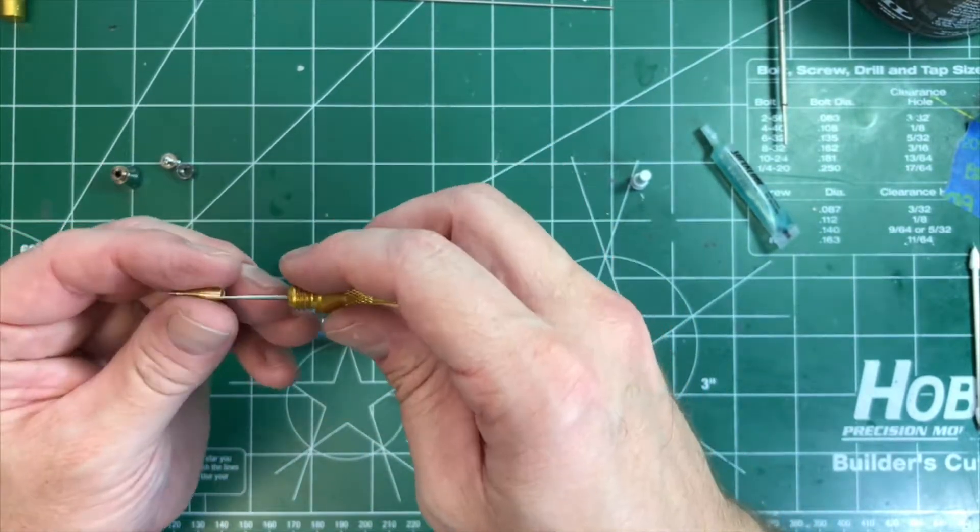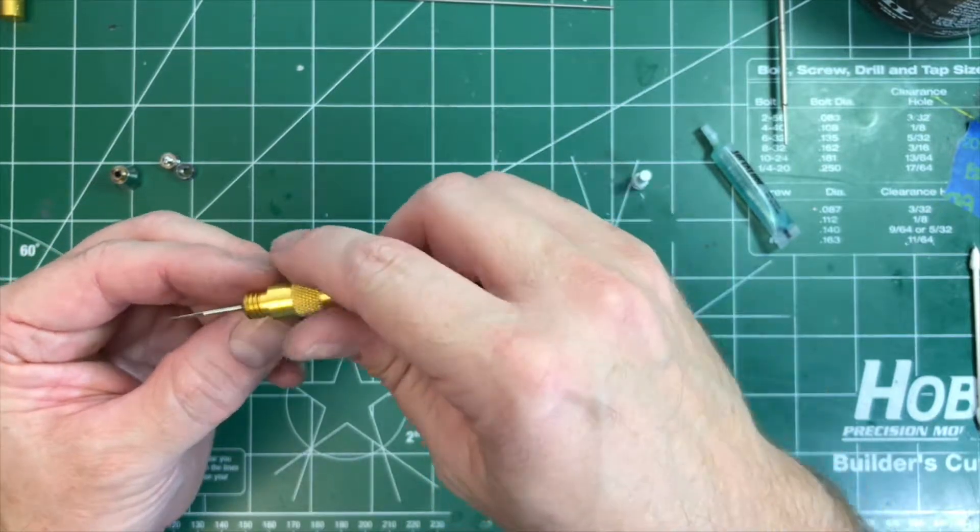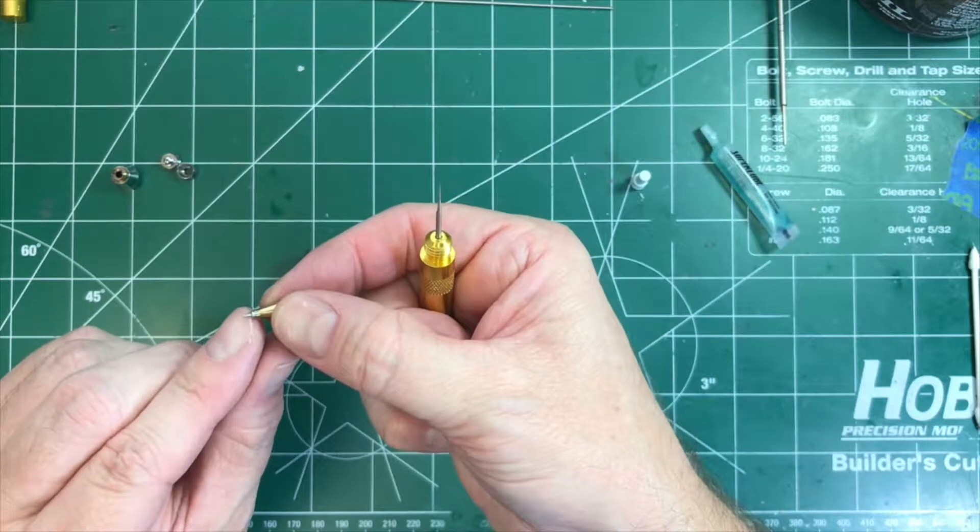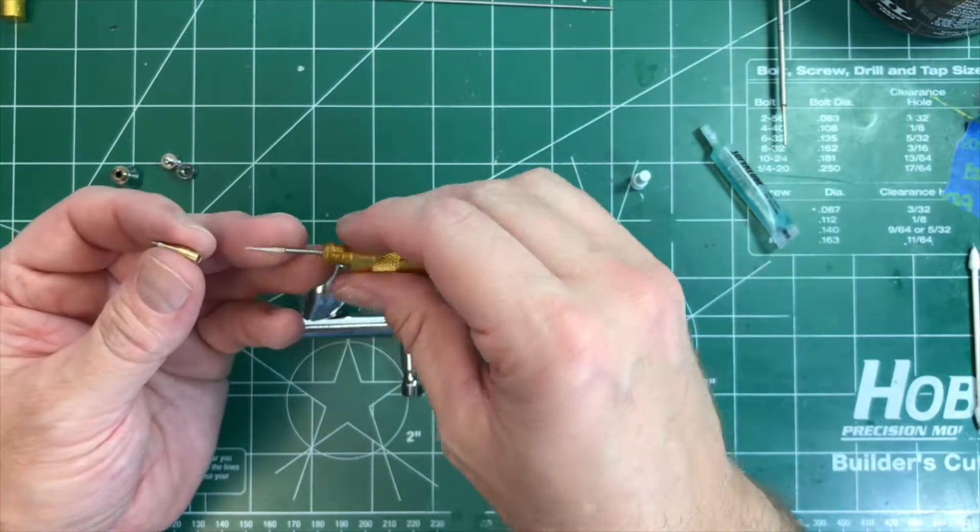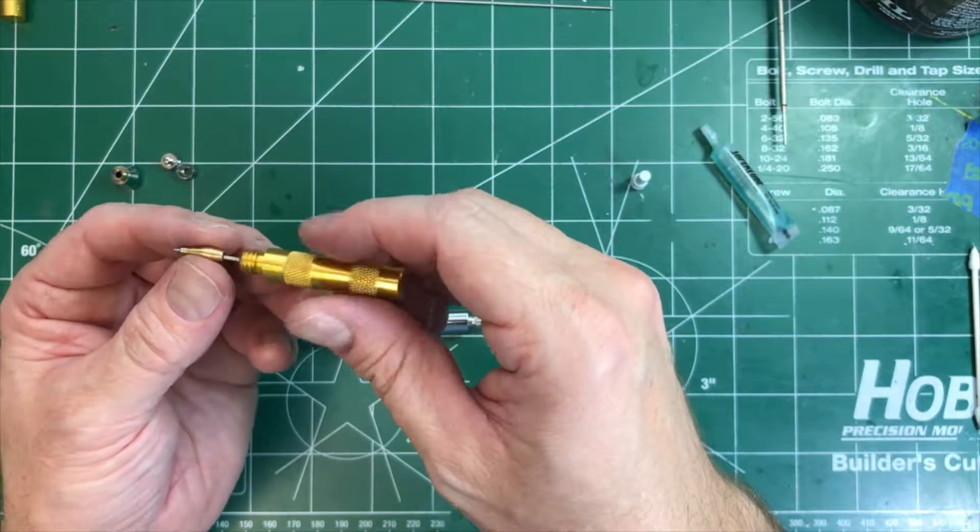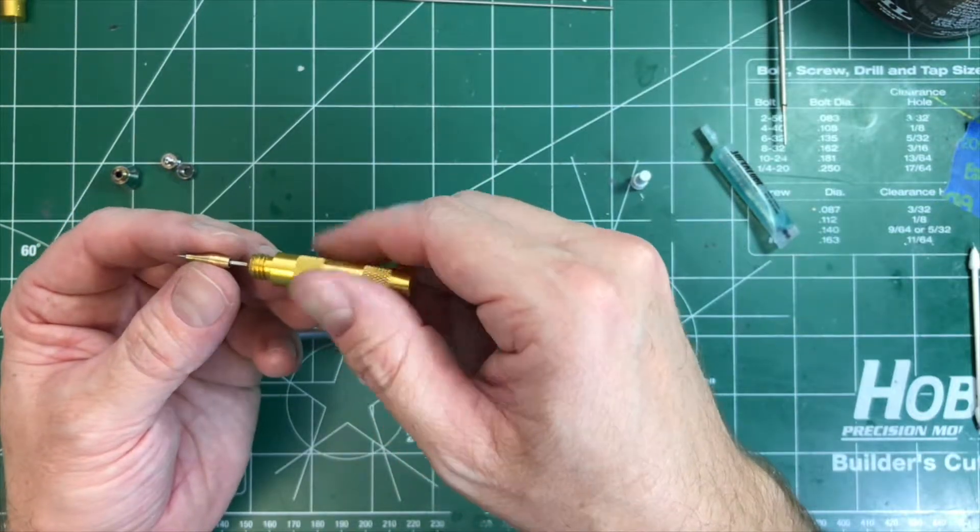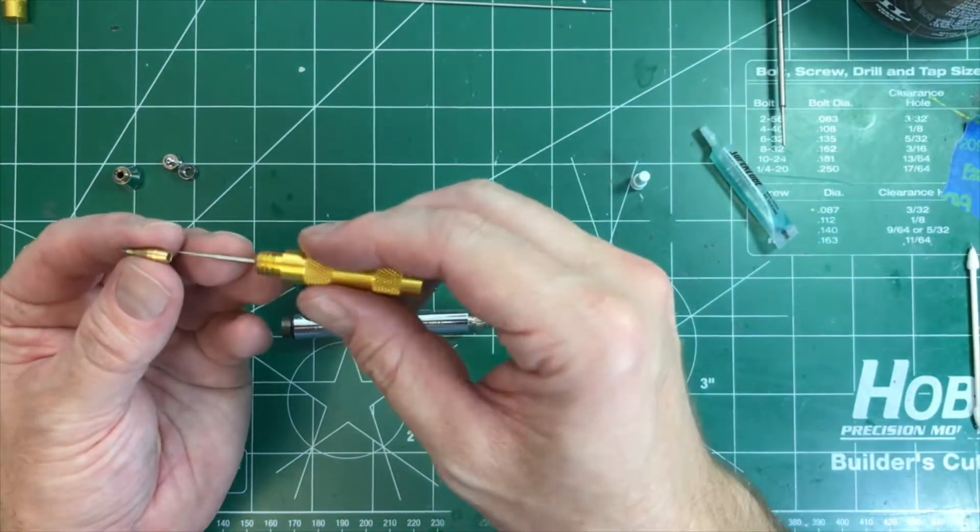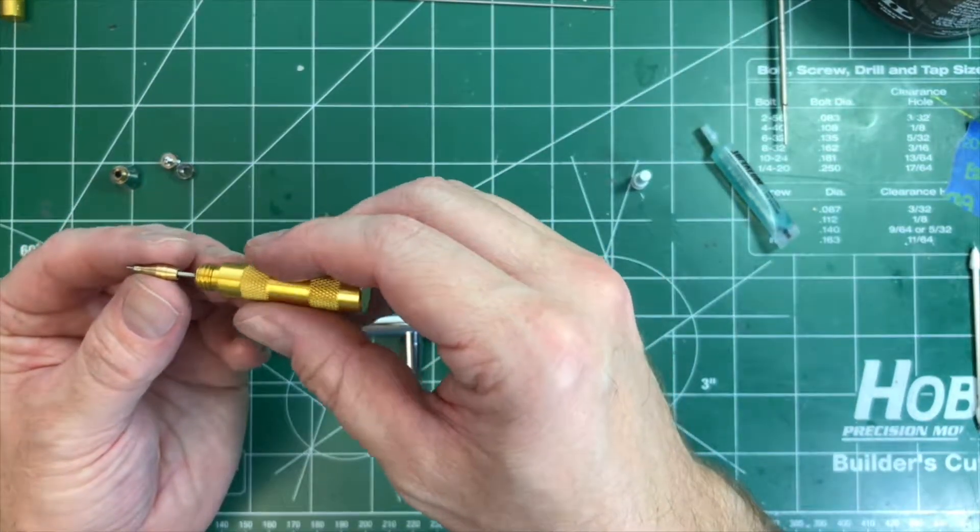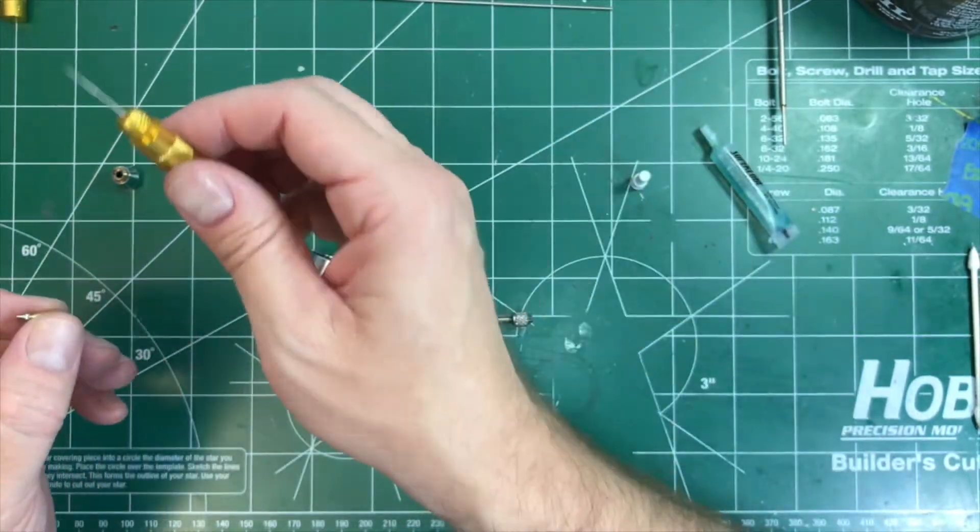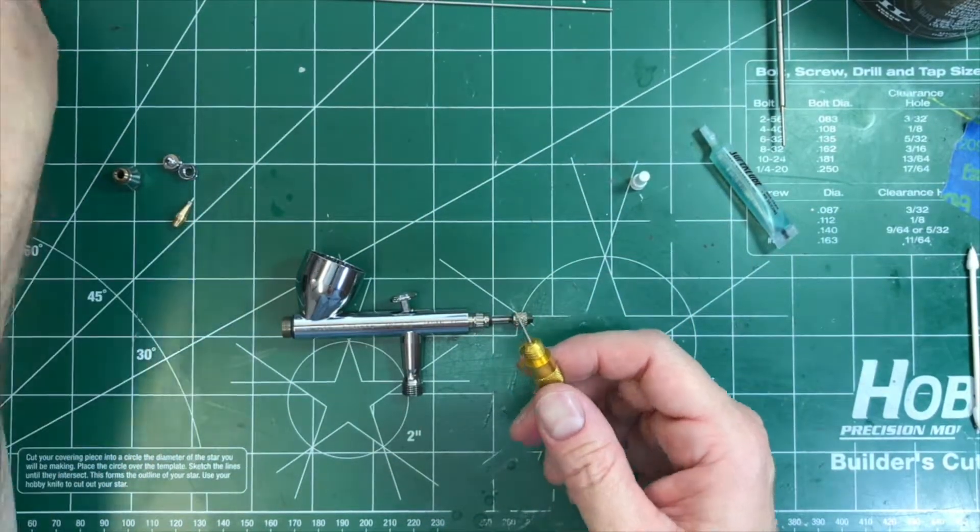But again, you don't want to jam this in here and just start scraping and really gouging that through there, because you will blow out the end of your nozzle, which is what you don't want. So again, very lightly until it stops, just give it a little bit of a turn, come out, clean it off, go back in. If you need to, you can dip it in some cleaning solution if you want, just to kind of help getting things loosened up. So that's what that's for—again, a very handy tool.